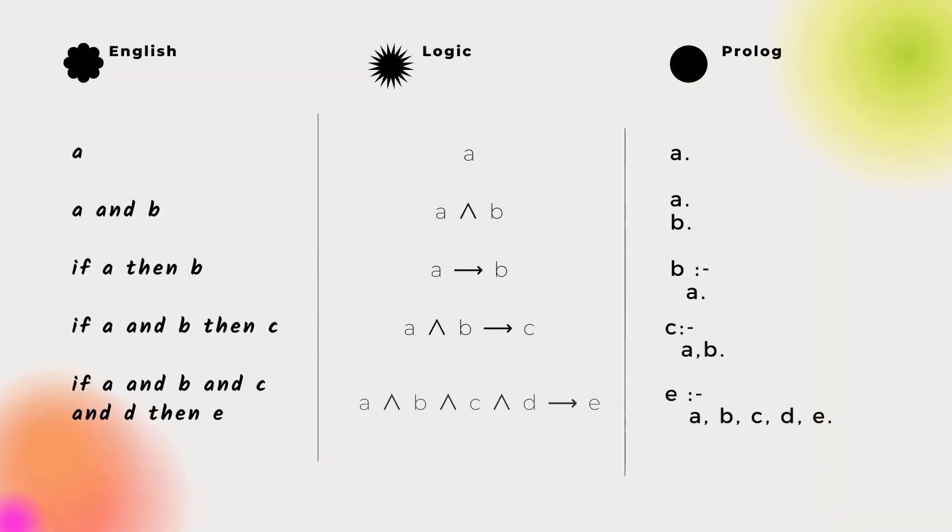Let's start with propositional logic. A single proposition is simple - it becomes a Prolog fact. And two propositions joined by AND become separate clauses in Prolog, so two Prolog facts.